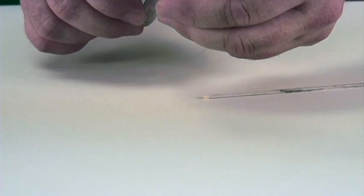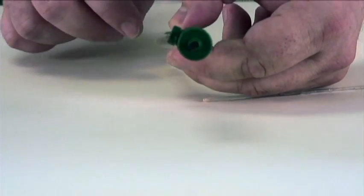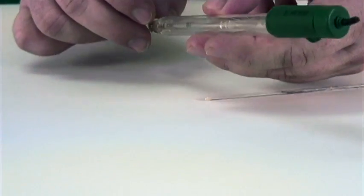In the single junction electrode there is one barrier between the reference wire and the solution being measured and that's the reference junction.